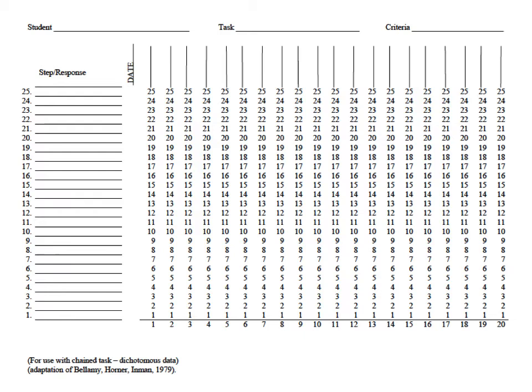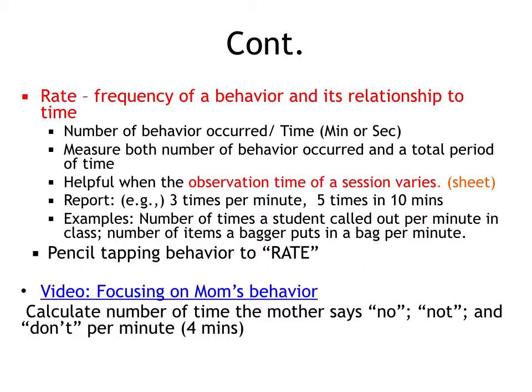This sheet is used when your target behavior is chained behavior. You need to write down the steps first, then put the date on top. You can circle the steps if the child could complete those steps independently, and cross out steps if the student needs help or cannot perform independently. Finally, you can count the total number of circled steps and get the percentage out of the total number of steps.